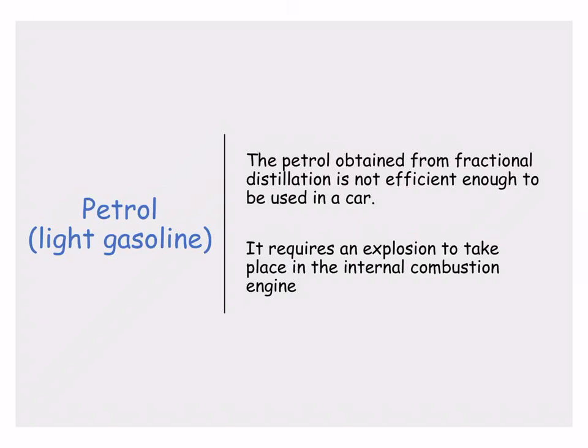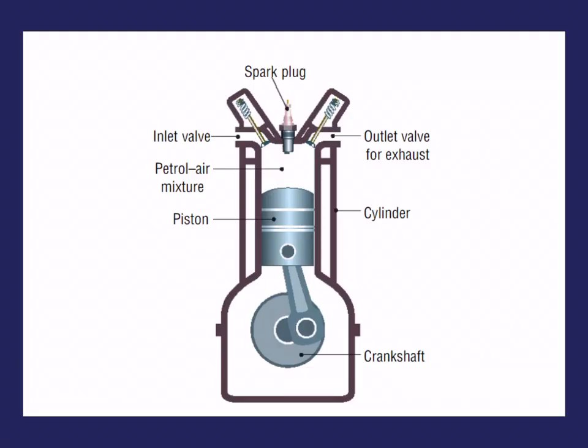Once we obtain petrol from a fractional distillation column, it's actually of no real use to us — it's not efficient enough to be used as fuel in a car. In the car, you have your internal combustion engine. The power to turn the wheels is produced in cylinders by an explosive reaction between petrol and air, and this explosion needs to take place at exactly the right moment.